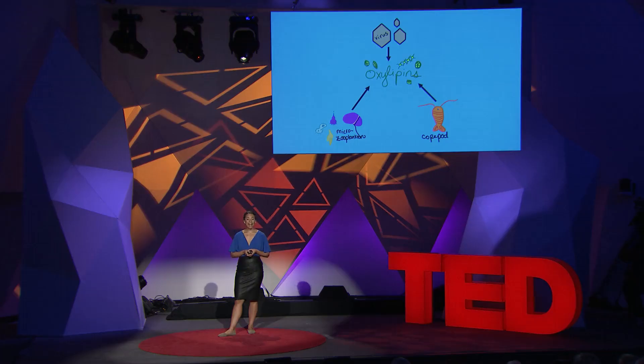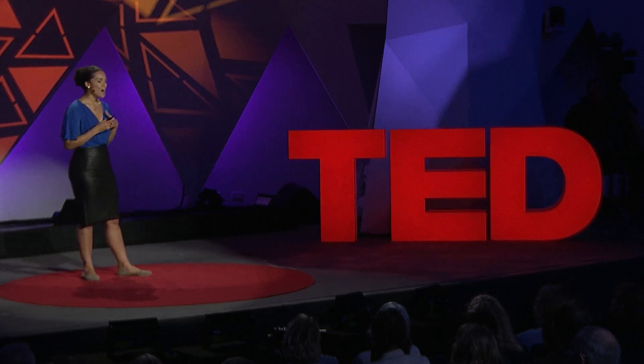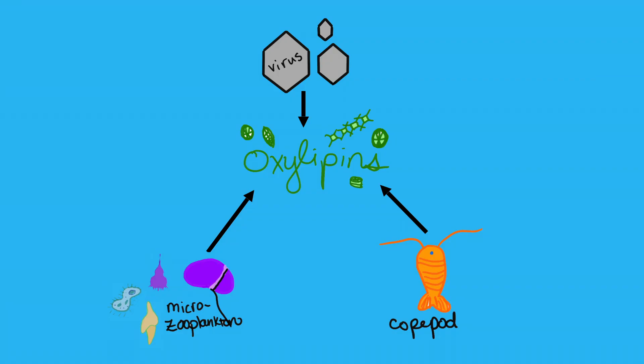We can think about oxylipins like death cries — the last words of phytoplankton. Whenever I'm investigating this, I like to think of it like a whodunit, the forensics of the ocean, a CSI microbial loop. Can we decipher these death cries? What I'll show you is that these death cries ultimately provide protection and provision for future generations of diatoms, so there appears to be some evolutionary incentive to do this.